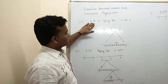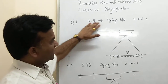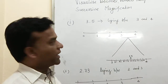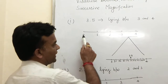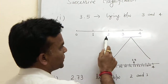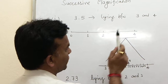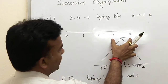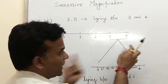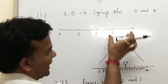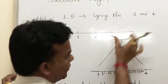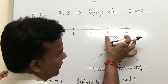First number we select is 3.5. We know it lies between 3 and 4. So we draw a number line and write 0, 1, 2, 3, and 4. The number 3.5 lies between 3 and 4, so we underline 3 and 4.